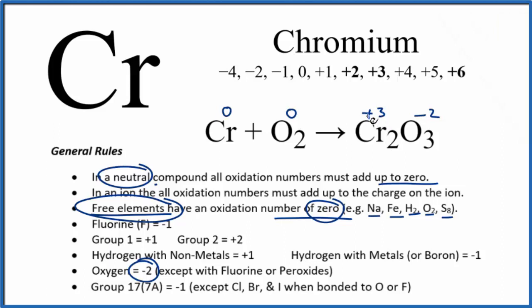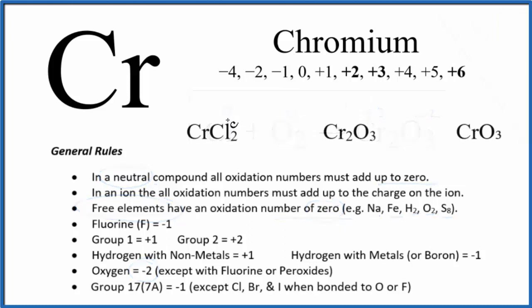Let's try a few more. For CrCl2, we look at the chlorine here. That's in group 17, it'll have an oxidation number of minus one. Two times minus one is minus two, so this has to be plus two.